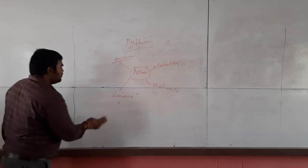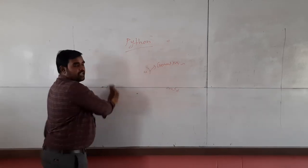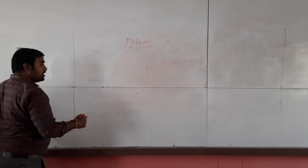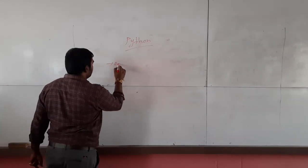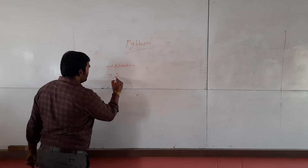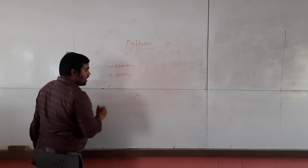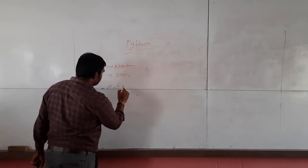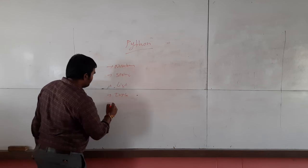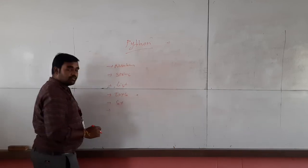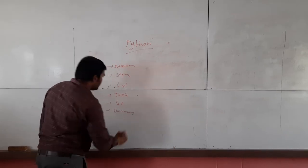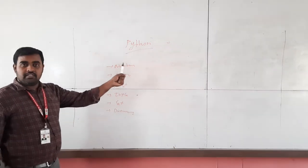Next I will give a small introduction about all the data types. The first one is number, the second one is string, the third one is list, the fourth one is tuple, the fifth one is set, and the sixth one is dictionary. These are the major data types in the Python language.